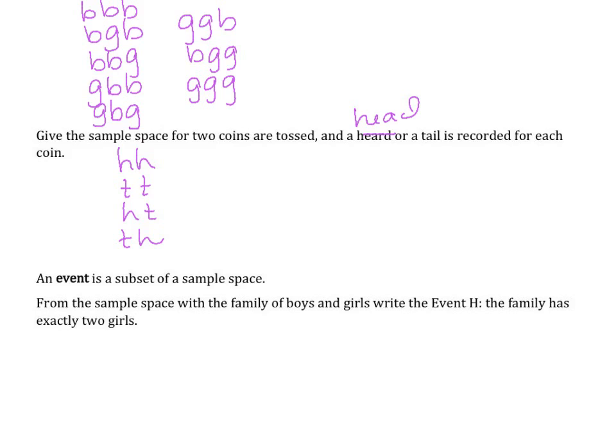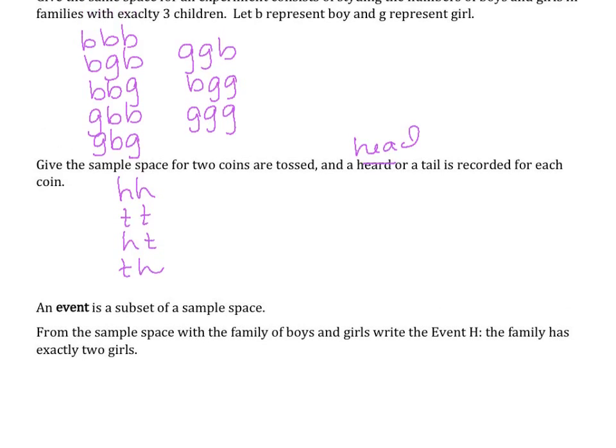An event is a subset of a sample space. So given the sample space above with the family of boys and girls, write the event H that the family has exactly two girls. Well, there are a few options where the family has exactly two girls: girl, boy, girl.